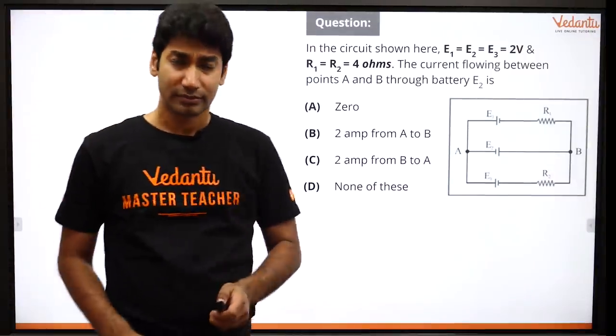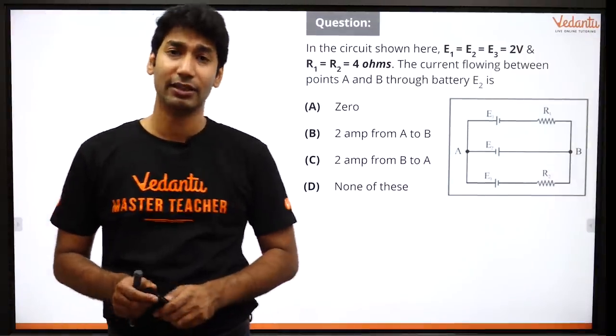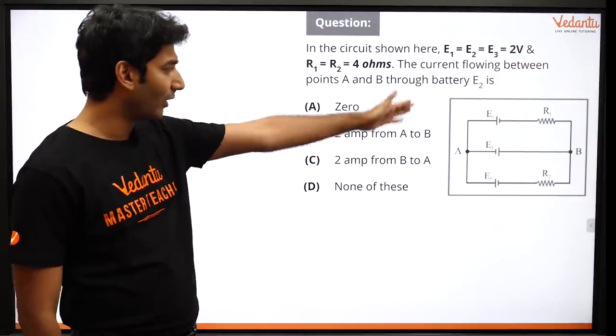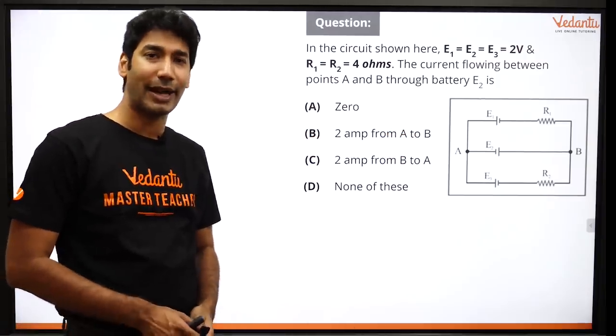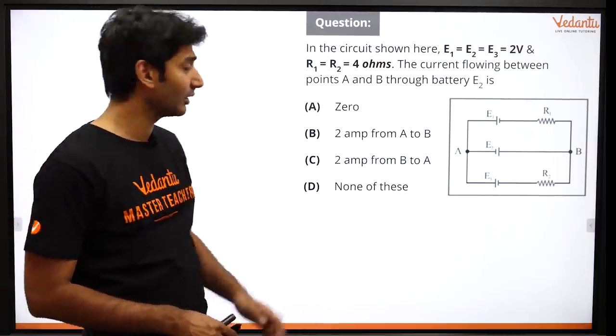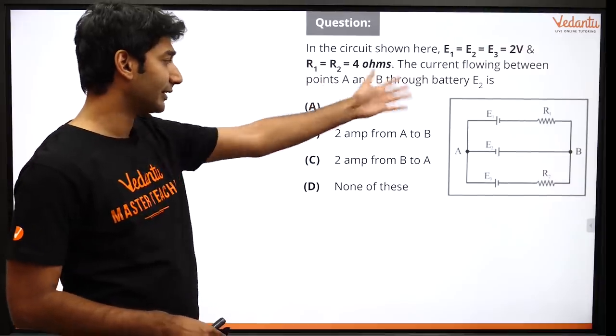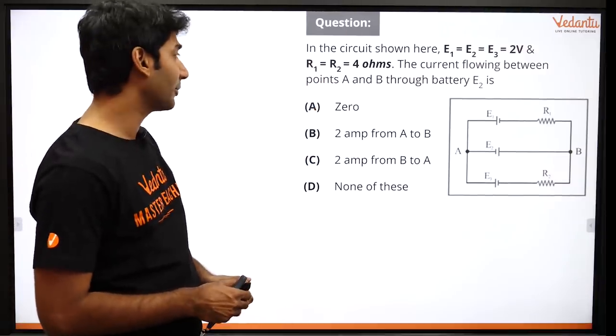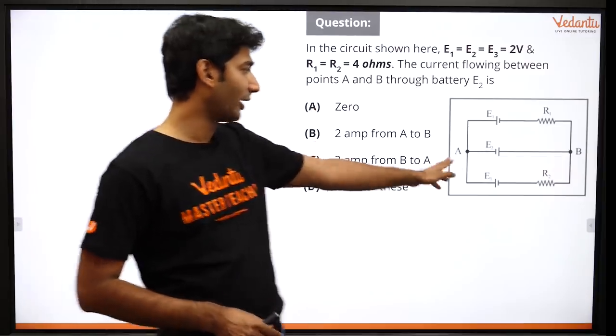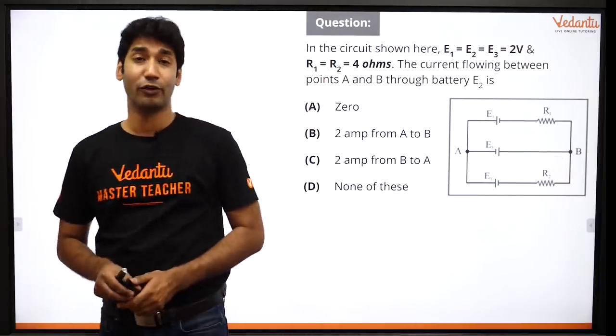So this is a question which actually came in one of the IITs. The question was straightforward: E1, E2, and E3 batteries all three of them are 2 volts and 4 ohm resistors, 2 ohm and we have asked the current flowing between point A and B. Point A and point B current flowing, what is the 4 options.